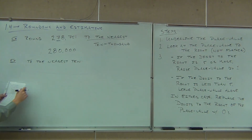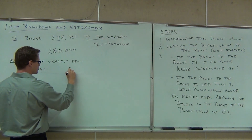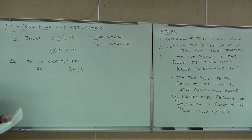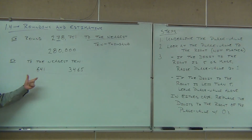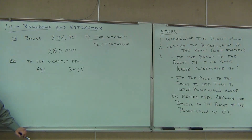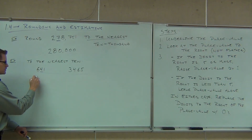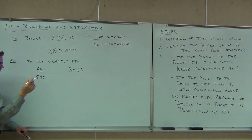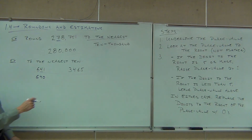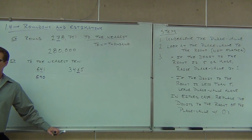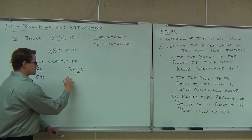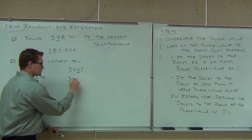Let's round these numbers to the nearest 10: 641 and 3,465. For 641, where is the 10s place? The digit is 4. Are we going to leave that 4 alone or raise it? Leave it alone — because the digit to the right is 1, which is less than 5. So we write 640. For 3,465, we're looking at the 6 in the 10s place. The 5 to its right says move it up, so the 6 becomes 7. We write 3,470.